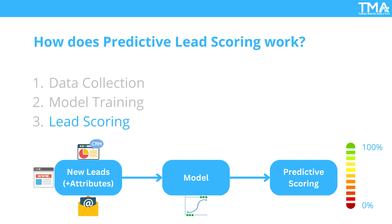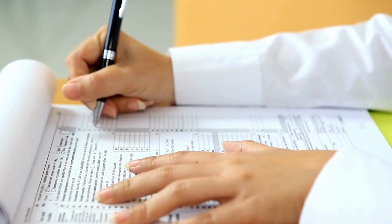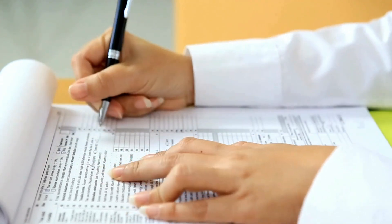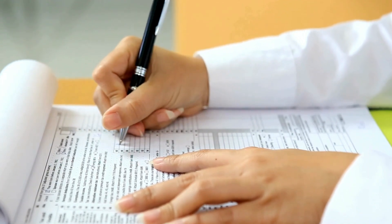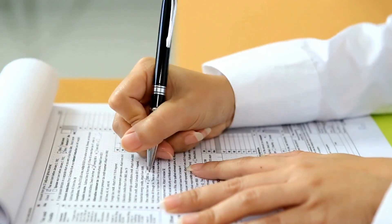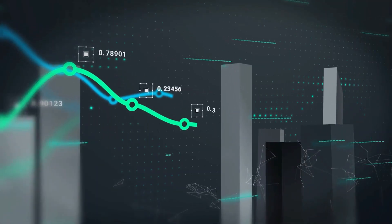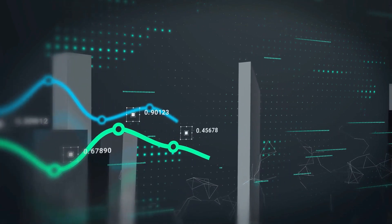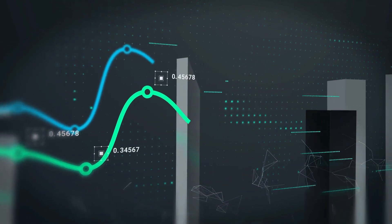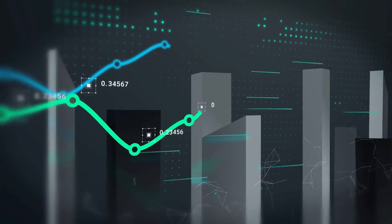Let's walk through a real-world example of how predictive lead scoring can boost your sales efforts. Imagine you're a sales manager at a B2B software company. You have a list of 1,000 leads that came in from a recent marketing campaign. Instead of assigning your sales reps to follow up with each one manually, you run these leads through your predictive lead scoring model. Your model assigns scores based on factors like company size, engagement with your website, job titles, and email click-through rates. It identifies the top 20% of leads with the highest scores, signaling they are the most likely to convert.